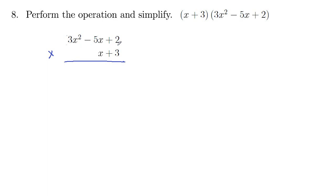So we've got 3 times 2 is 6. 3 times negative 5x would be negative 15x. That's a positive 6. And then 3 times 3x squared is 9x squared.